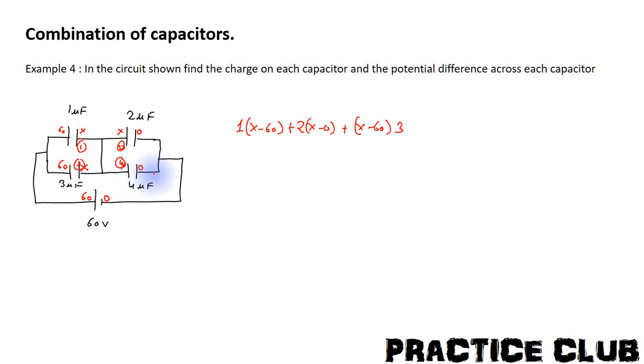And the 4th plate will have charge (x minus 0) into its capacitance. And the sum of all these charges we know will be equal to zero. This equation has one unknown and can be solved to get the value of x.